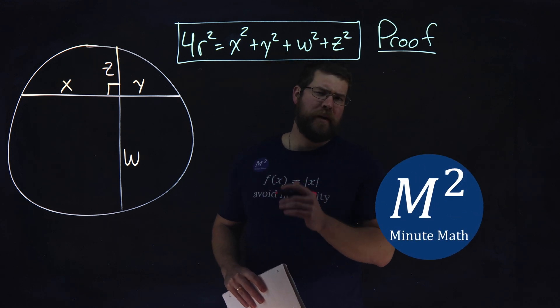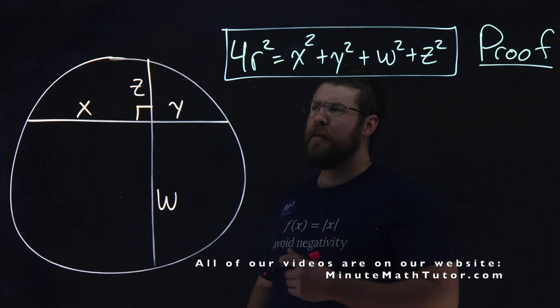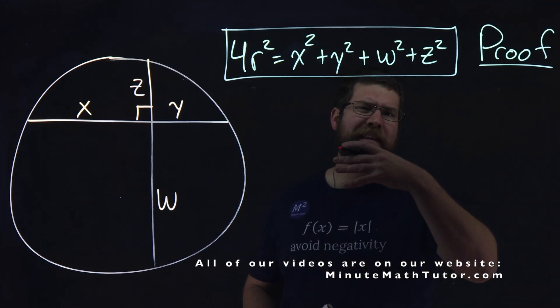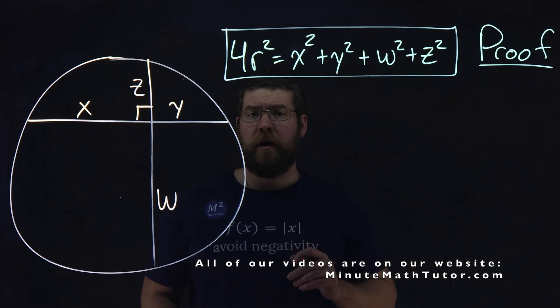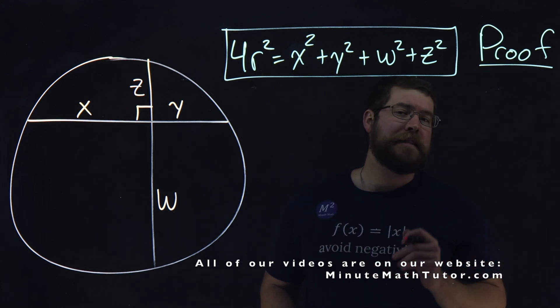Hi, I'm Sean Gannon, and this is MinuteMath. If you remember from our last video, we were given a circle similar to this, and we used this equation: 4r² = x² + y² + w² + z².